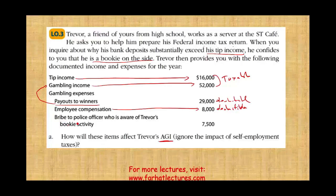A bribe to a police officer who's aware of Trevor's bookie activity — that's why you don't want to get involved with this, because now you have police officers involved being bribed and you're aware of it. You might find yourself testifying one day. As a tax preparer, you have absolutely no confidentiality privilege between you and the client. Knowing the police officer's name or anything like this — you're going to be in trouble down the road.